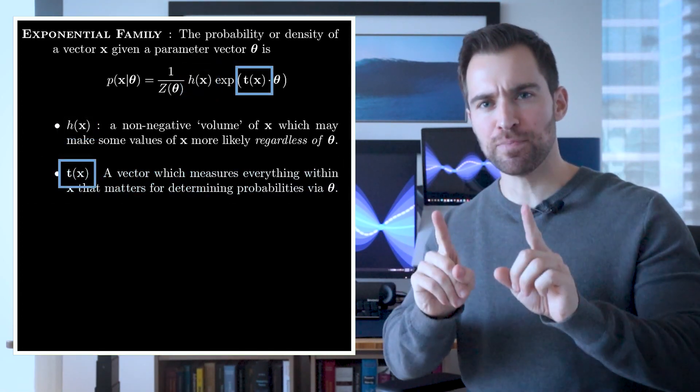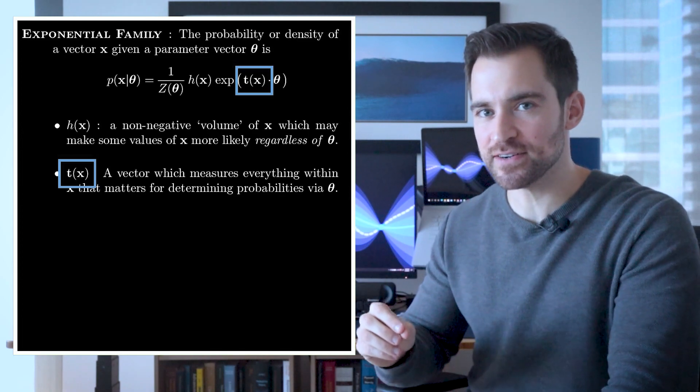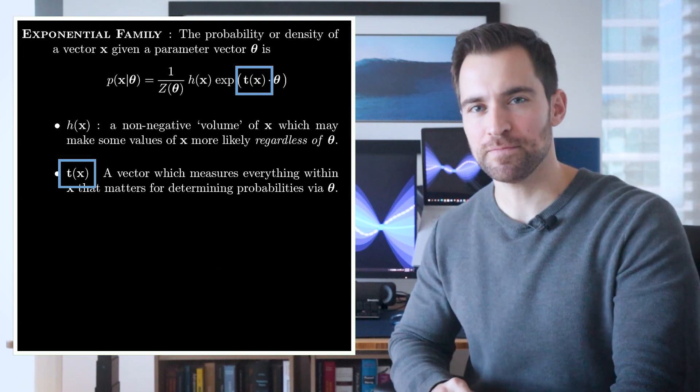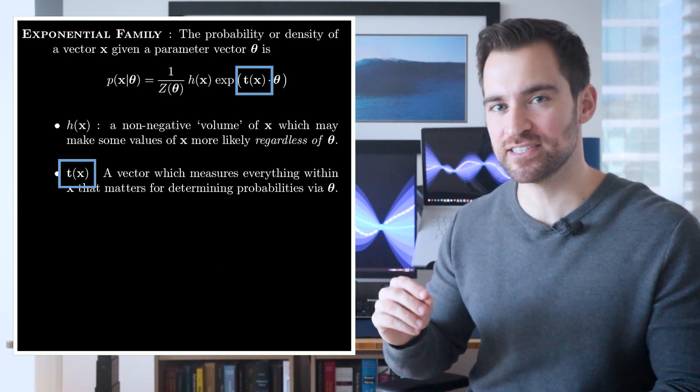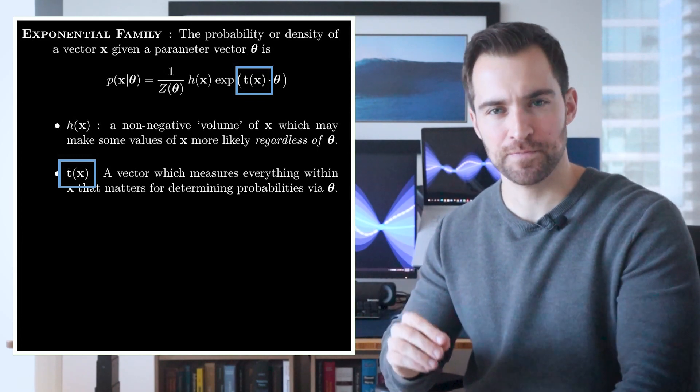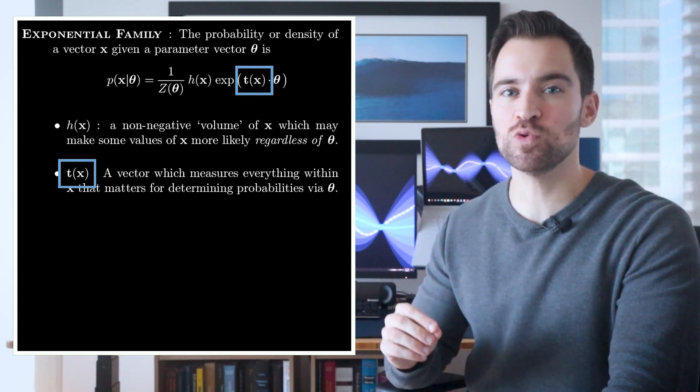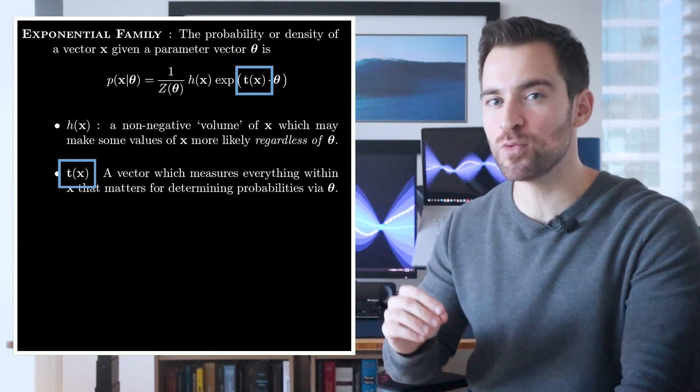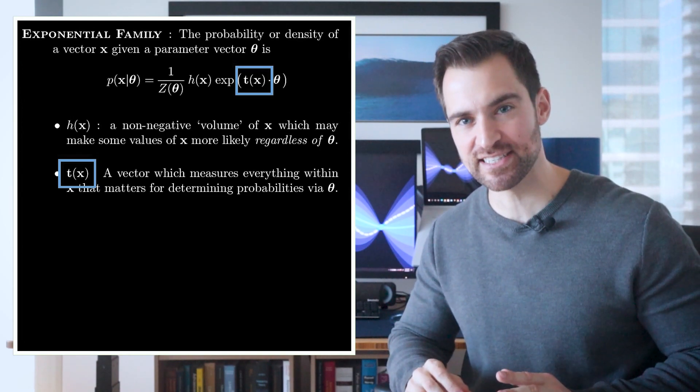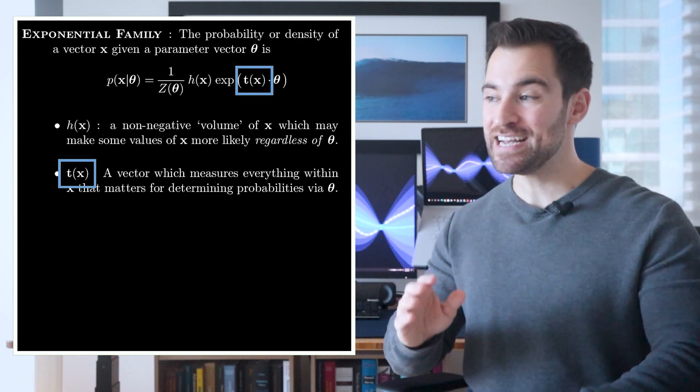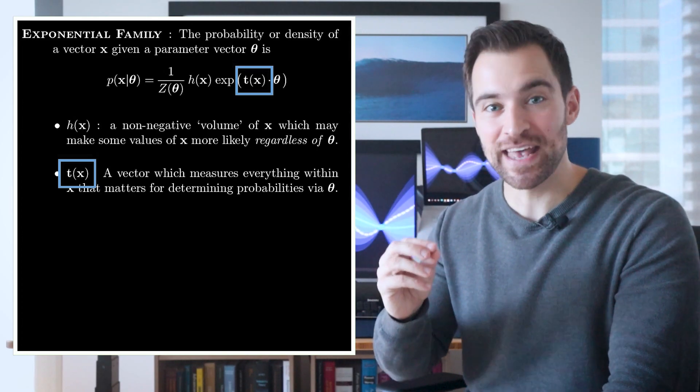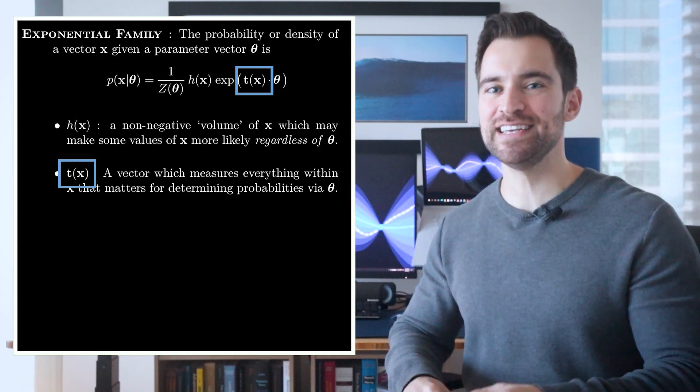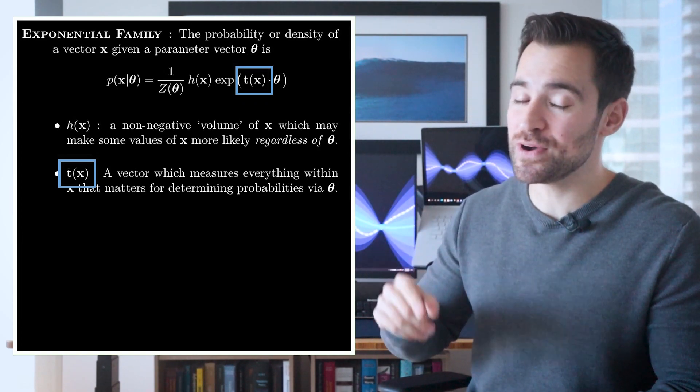Moving on, let's consider t of x. t is in bold, which means the output is a vector. So t of x is a vector-to-vector function. Okay, but what does it mean? Well, we call this the sufficient statistics. Pretend for a second that h of x is 1. In that case, t of x would measure everything within x that makes a difference in determining the probability. In other words, if you change x in a way that doesn't change the sufficient statistics, then you won't change the probability. That is, t of x is sufficient in determining the probability of x. Okay, but what about when h of x isn't 1? Well, in that case, you might say that t of x is sufficient in the ways the parameters care about.